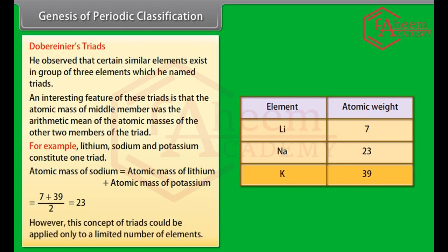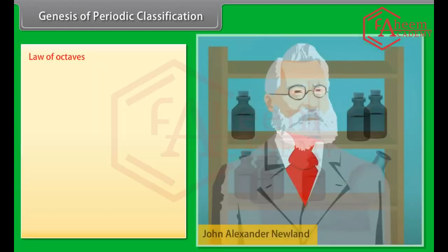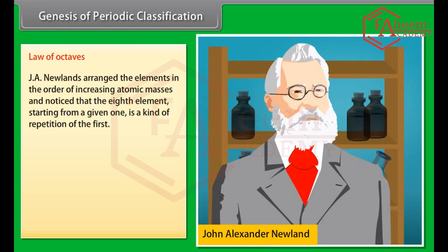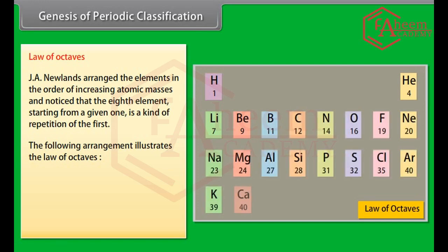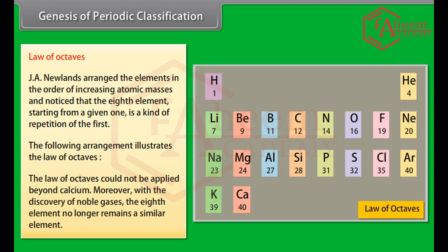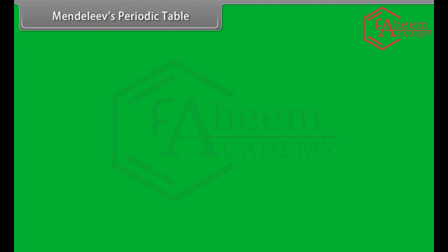However, this concept of triads could be applied only to a limited number of elements. Law of Octaves: J.A. Newlands arranged the elements in the order of increasing atomic masses and noticed that the 8th element starting from a given one is a kind of repetition of the first. The Law of Octaves could not be applied beyond calcium. Moreover, with the discovery of noble gases, the 8th element no longer remained a similar element.